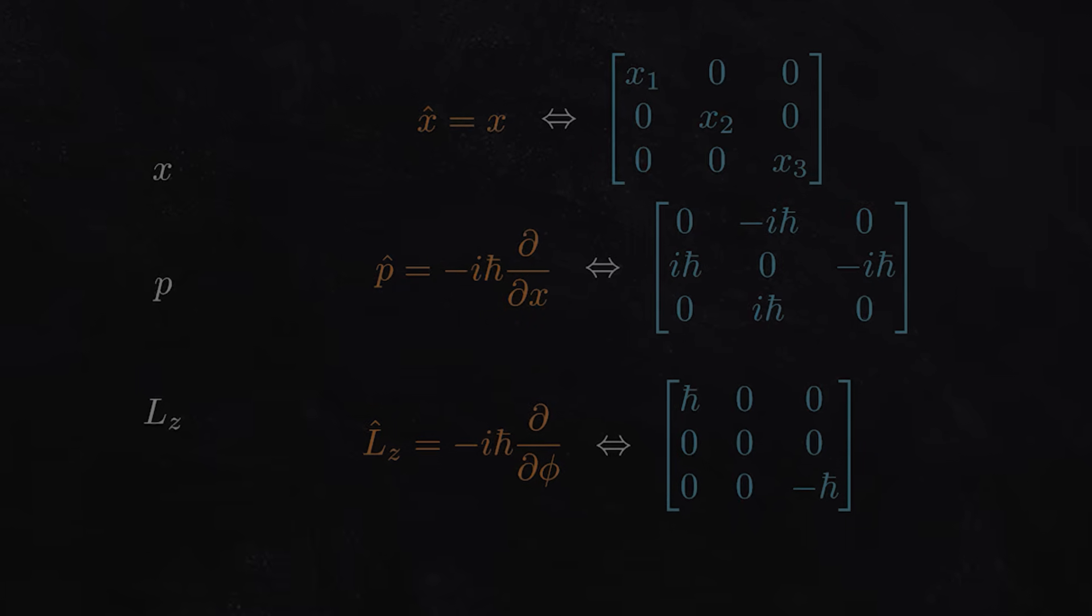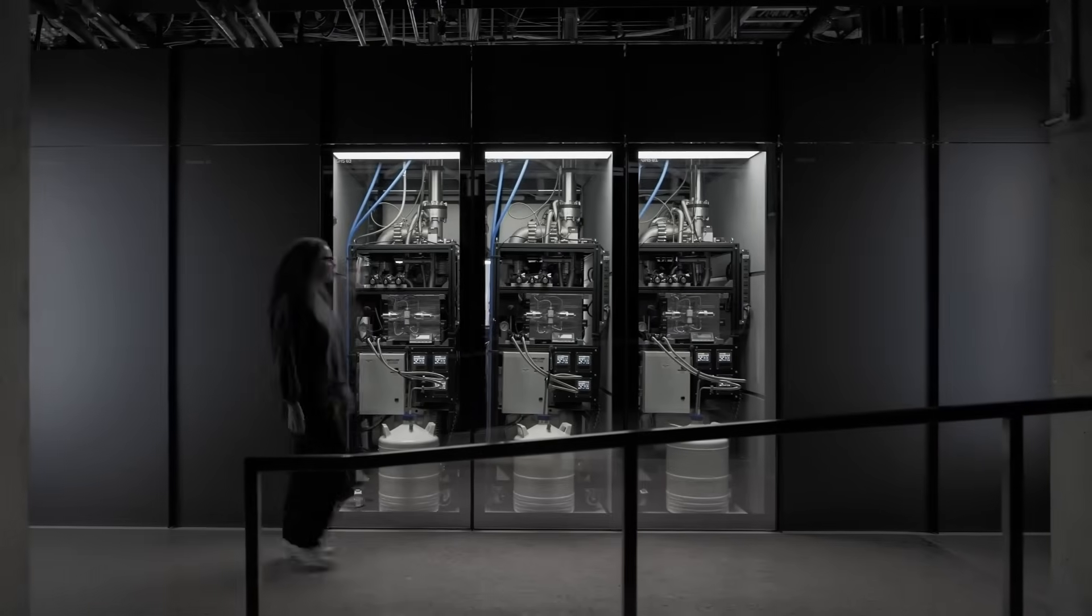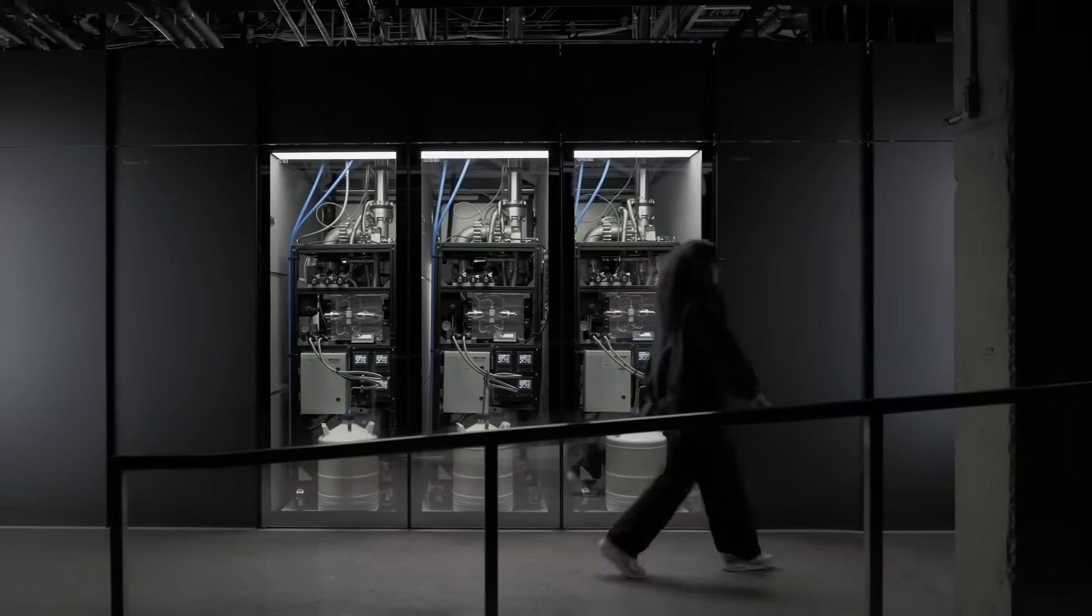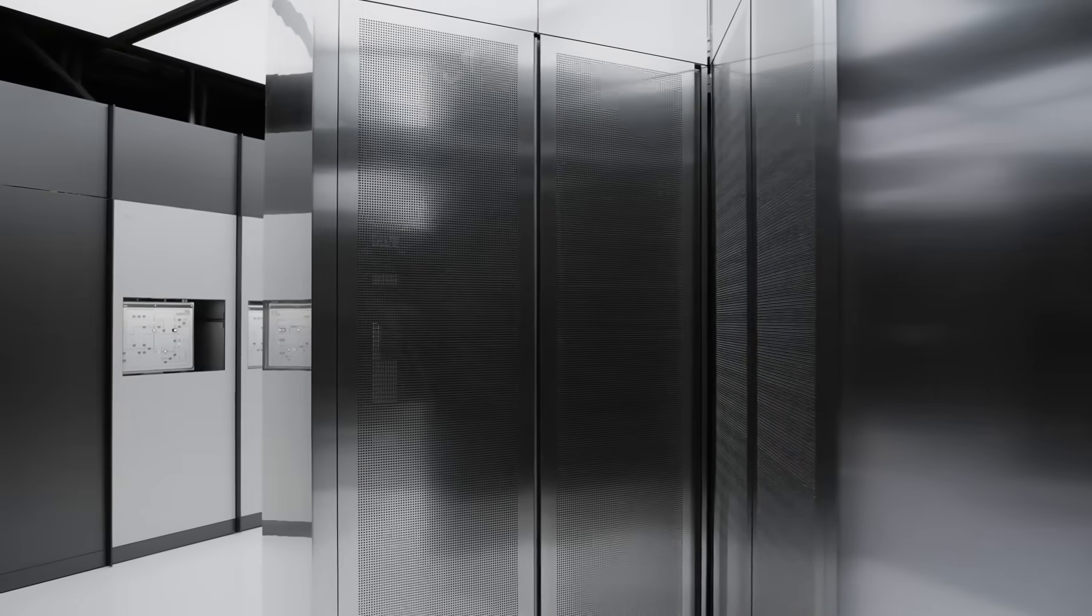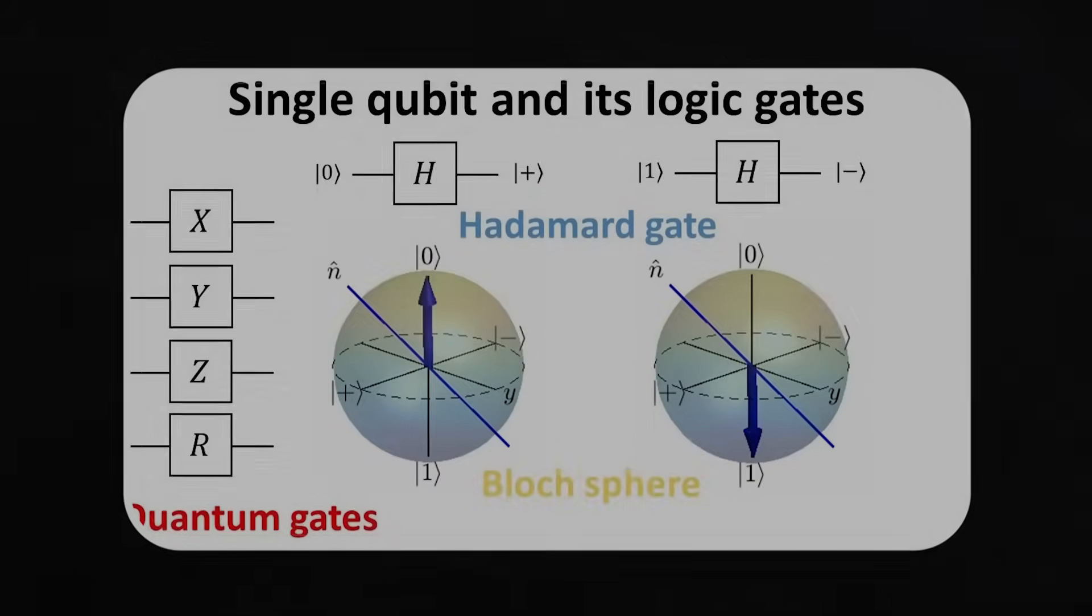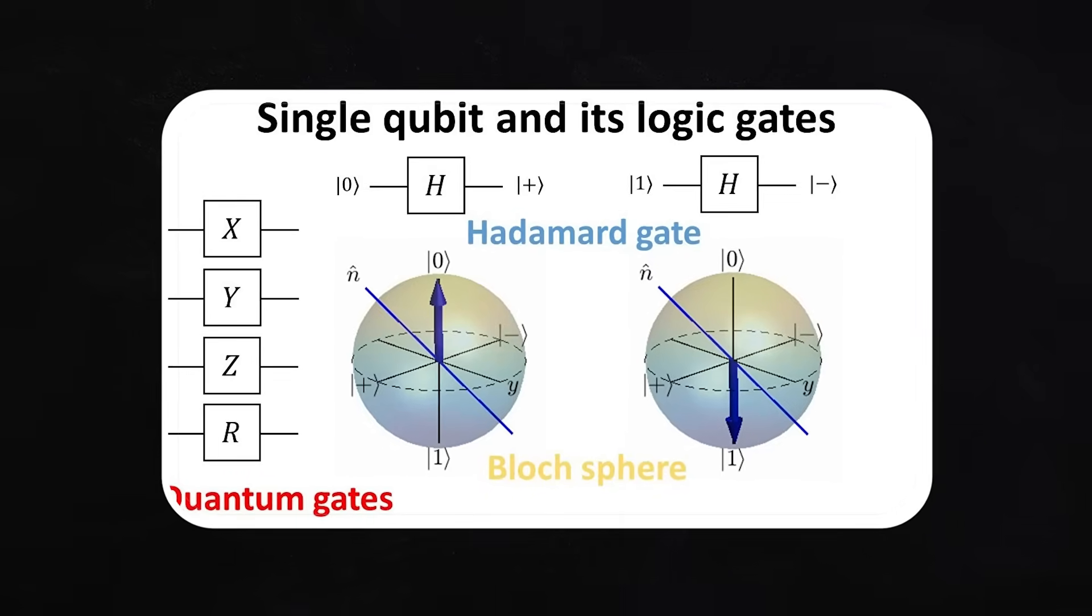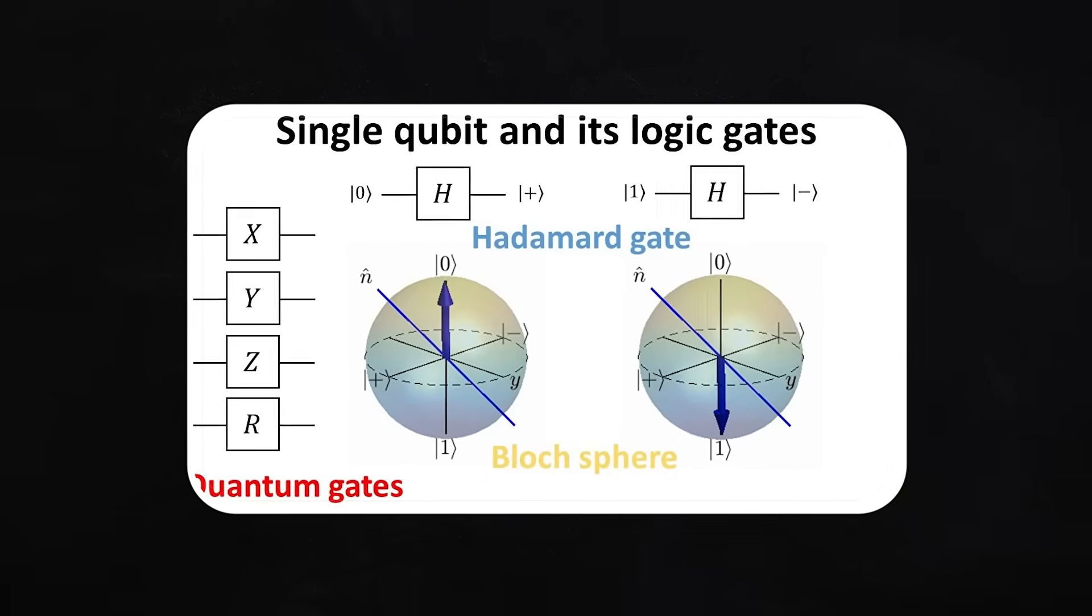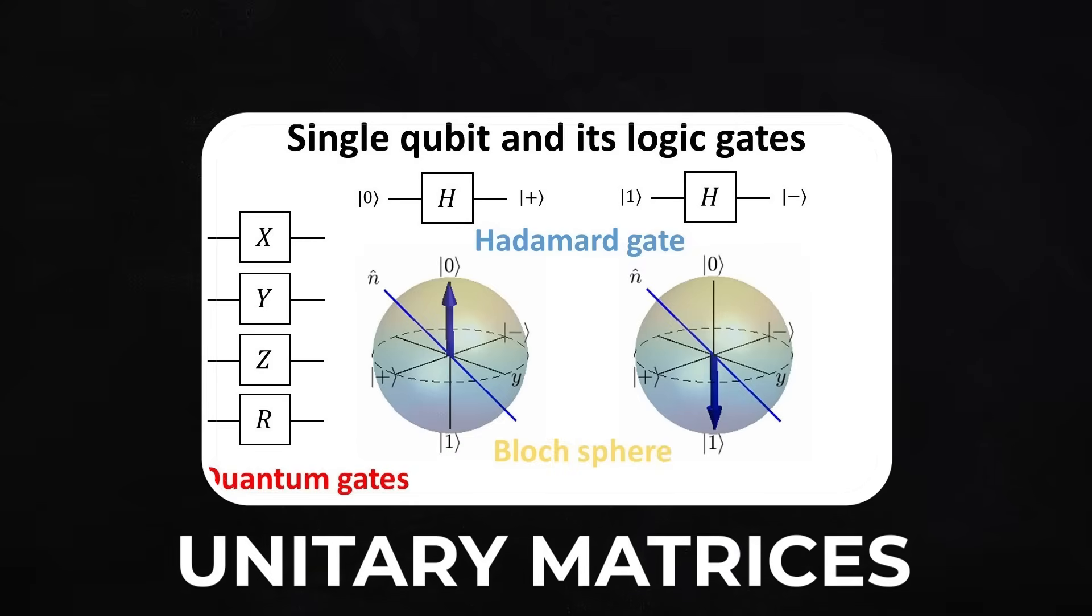I'll get more in-depth into wave functions later. This logic extends into quantum computing, which is just an application of quantum mechanics. In quantum computing, the logic gates that we use to change the state of our qubits during quantum algorithms are also linear transformations. More specifically, they're unitary matrices.